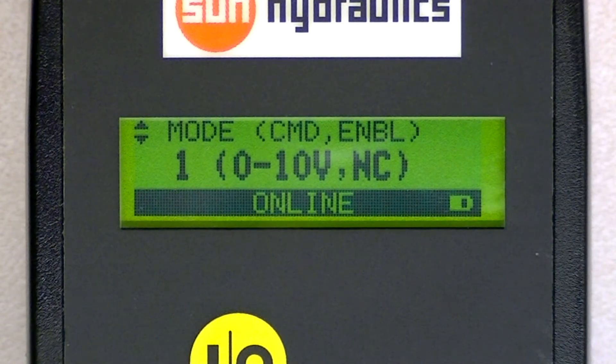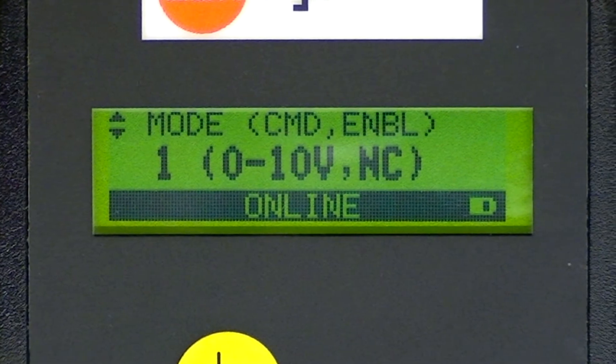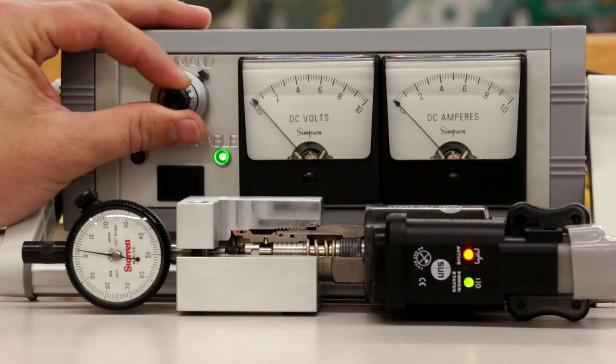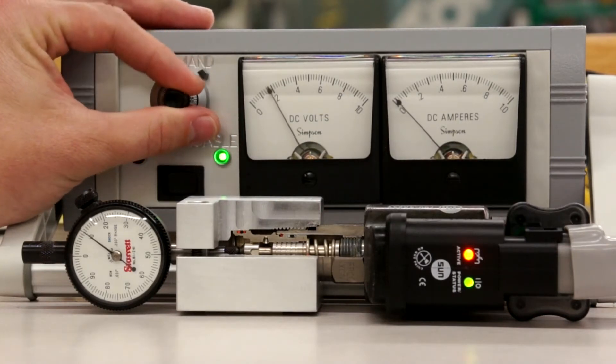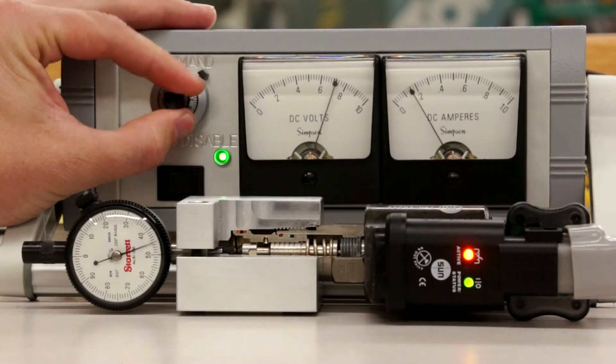We start off in mode 1, which means it takes a command from 0 to 10 volts and the enable function is not connected. We're ignoring the enable. As we increase the voltage from 0 to 10 volts, the output of the amplifier changes proportionally.